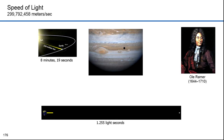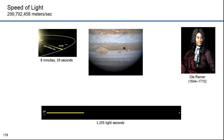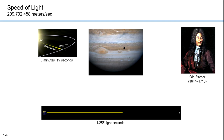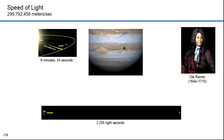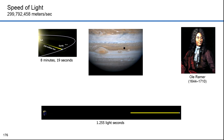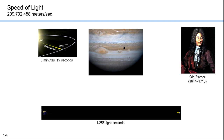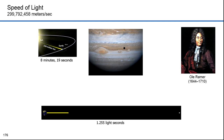In 1638, Galileo proposed an experiment to measure the speed of light by observing the delay between uncovering a lantern and its perception some distance away. He was unable to distinguish whether light travel was instantaneous or not, but concluded that if it weren't, it must nevertheless be extraordinarily rapid.